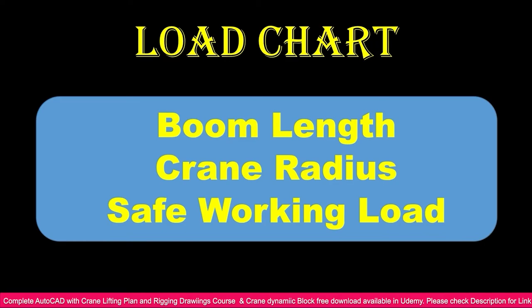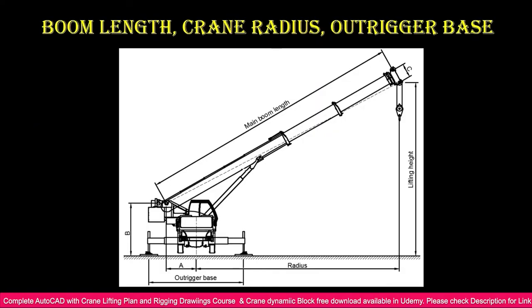For the load chart, you need to get the boom length and safe working load from the chart. You decide the crane radius based on your site location, then use that radius to find the boom length and safe working load in the load chart. The main boom length, radius, lifting height, and outrigger base are all visible in the chart.